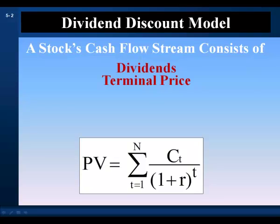In discounted cash flow valuation, we would discount the stock's cash flows. The cash flow stream for a common stock consists of cash dividends and the terminal price of the stock that the investor receives when the stock is sold at the end of the investor's investment period.